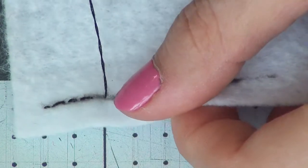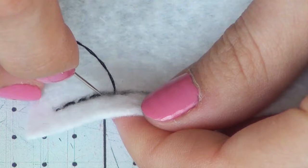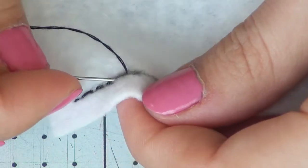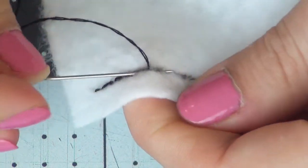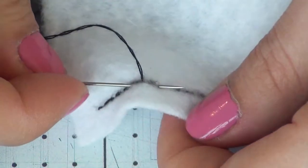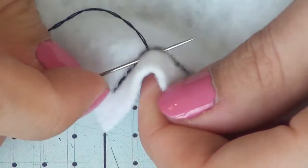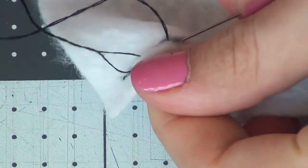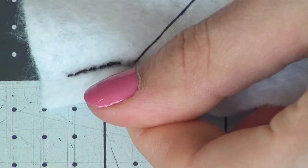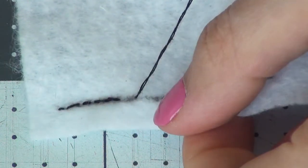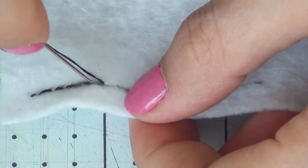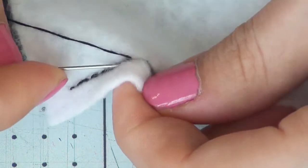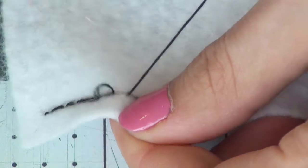When you start to get really good at this, what you can do is when you go back down you're going to immediately bring your needle back up on the other side the same distance away from the thread. So at the same time it'll make your stitch as well as keeping your needle on the outside of your project. This does require a little more practice to get them all even, but it does go a little bit faster.